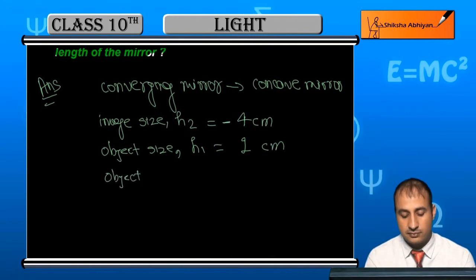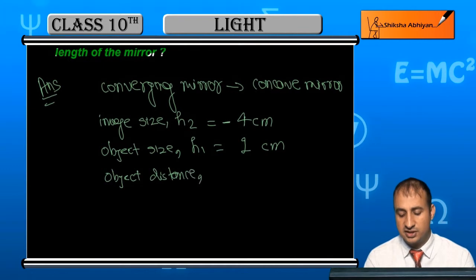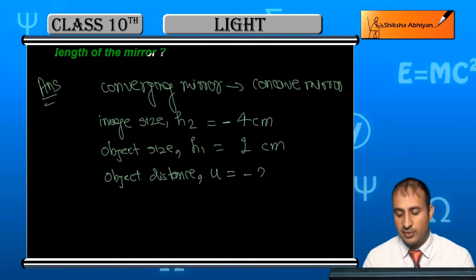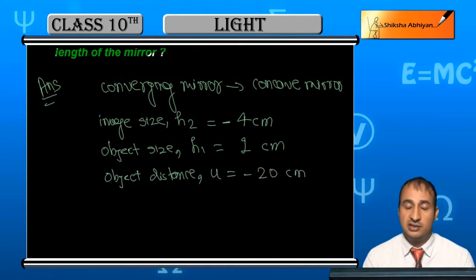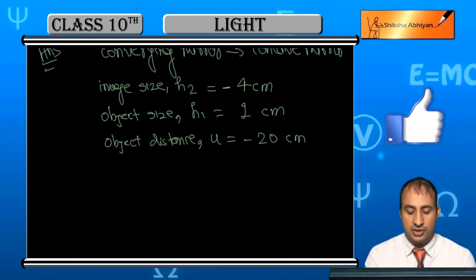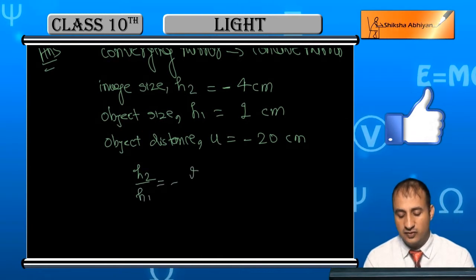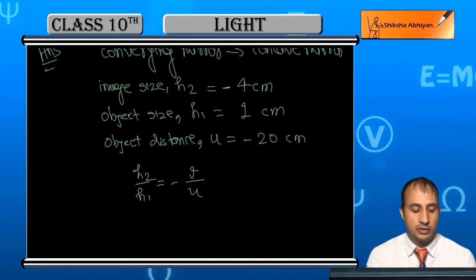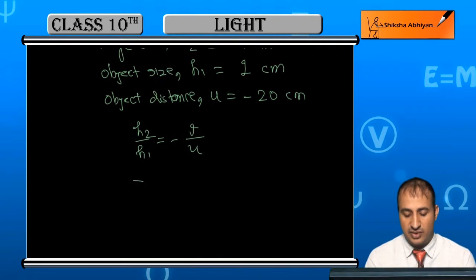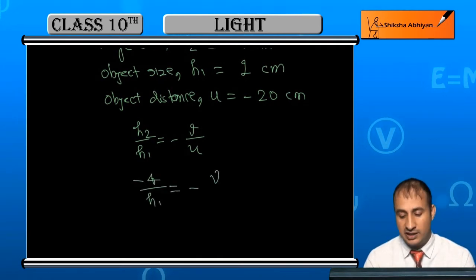So the object distance u is equal to -20 because according to sign convention it's negative. Therefore, using the formula h2/h1 = -v/u, we have -4/1 = -v/-20.